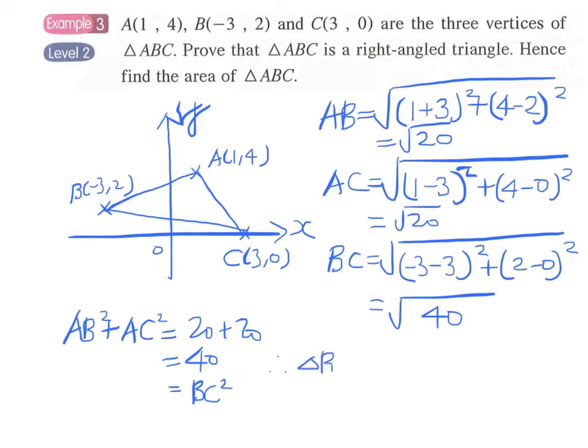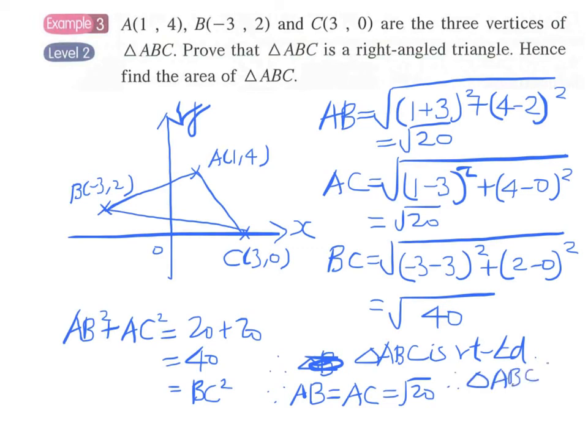Therefore, triangle ABC is right angled. But actually, we can do more than this. AB also equals to AC, so this is also an isosceles triangle. AB equals to AC, therefore triangle ABC is isosceles.